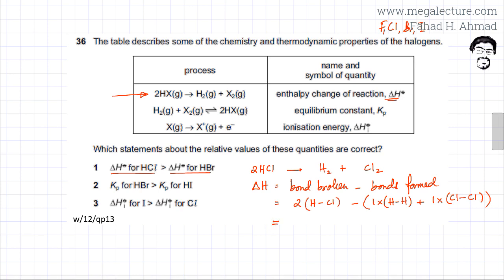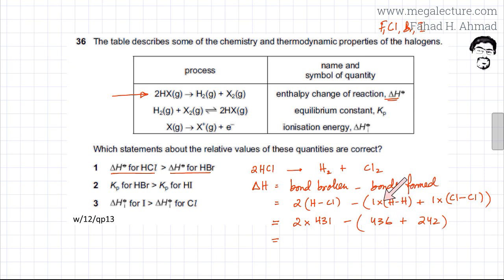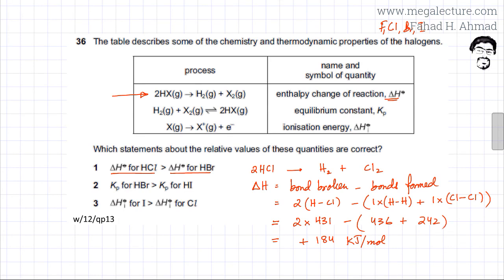Looking at the data booklet: the HCl bond energy is 431 kJ/mol, so that's 431 × 2. The H–H bond energy is 436, multiplied by 1. The Cl–Cl bond energy is 242, multiplied by 1. So it's 2 × 431 − (436 + 242), which gives a value of +184 kJ/mol. The enthalpy change for HCl is +184 kJ/mol.